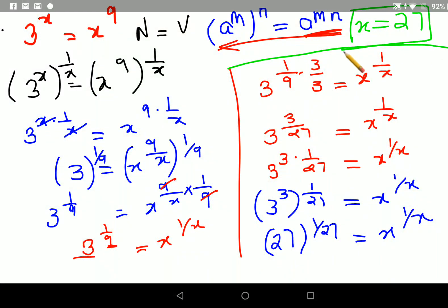I hope this is very clear to everyone. Now let's put this back in our question and check. The question was 3^x equals x^9, so we have the value of x as 27. Let's put it back. Your LHS will be 3^27 and your RHS will be 27^9.